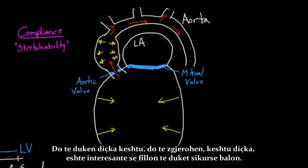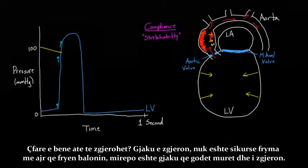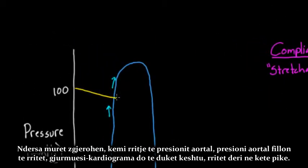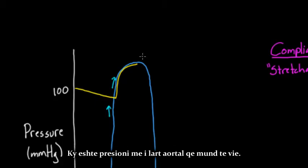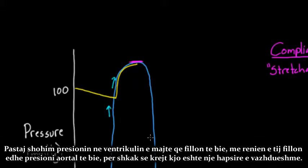This is quite interesting, because now the aorta looks balloon-like. What's stretching it out? Blood is literally pushing into the walls and stretching them. So while the walls are stretching, you get an increase of aortic pressure — the aortic pressure starts to rise, which is what the tracing looks like. The peak represents when the walls are maximally stretched. Then the left ventricle pressure starts falling, and so does the aortic pressure, because it's all a continuous space.